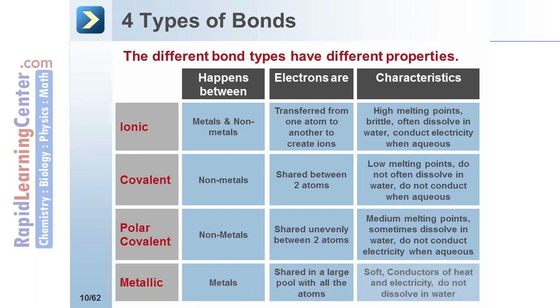Metallic compounds are formed between metal atoms, and they have a large pool of electrons that are shared with all the atoms in the network. This results in soft solids, conductors of heat and electricity, and compounds that do not dissolve in water.